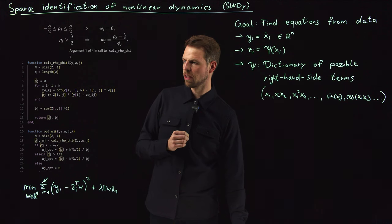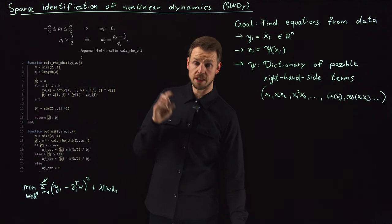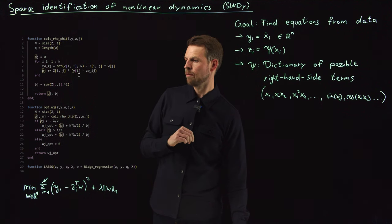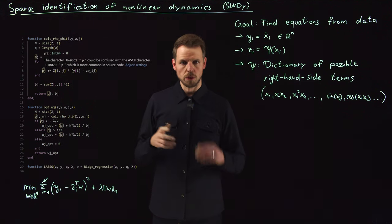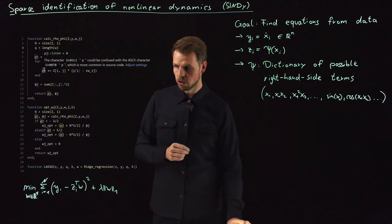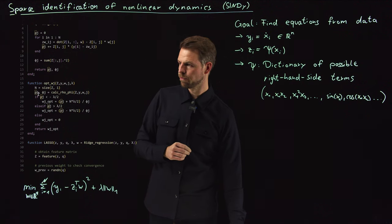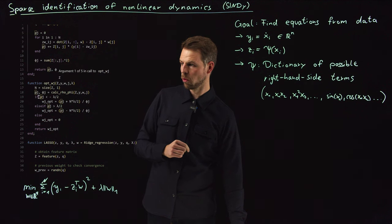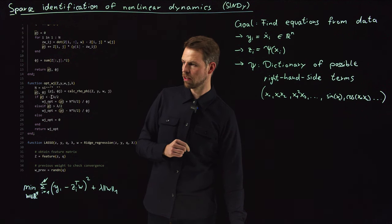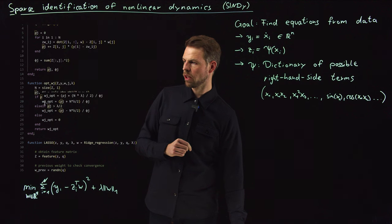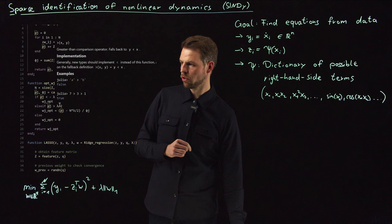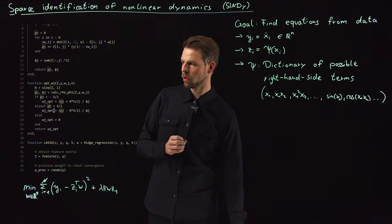You can simply implement this by a function that calculates rho and phi. You just have to write the data, the w vector, and the index j, which is the active index. This is exactly what we did in the mathematical derivation to get rho and phi. And then the optimization for wj is simply as we had it before. We have this case distinction. If rho j is less than lambda half, you get this rule for rho j.